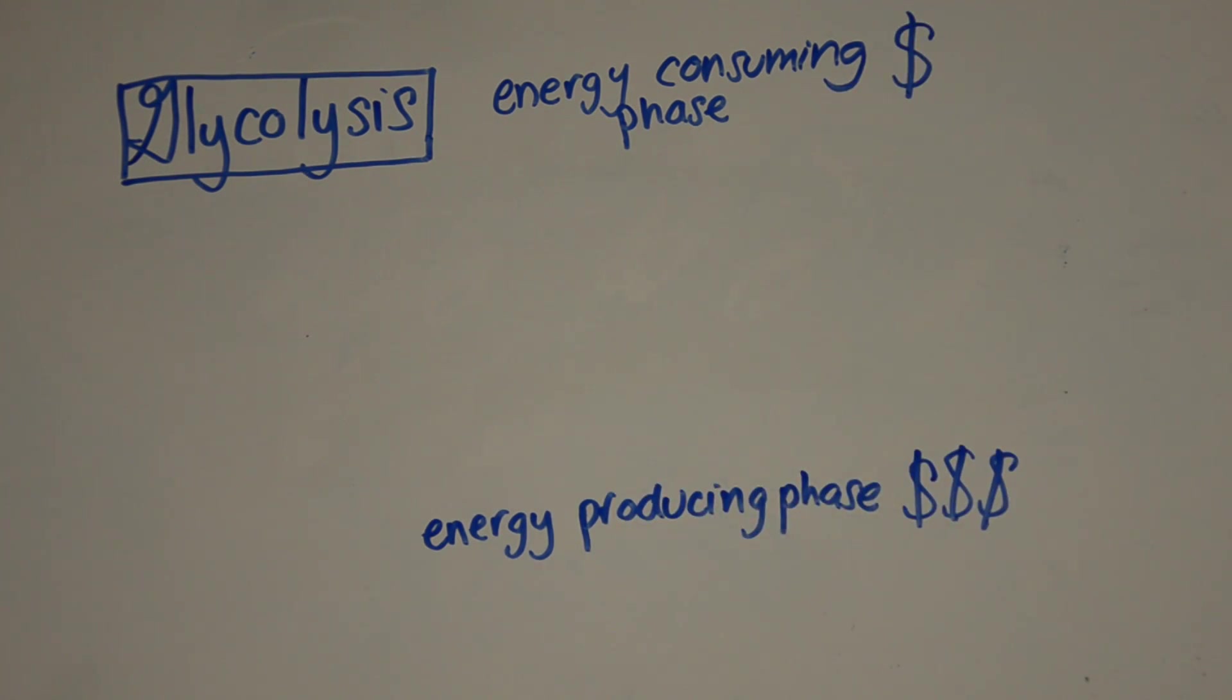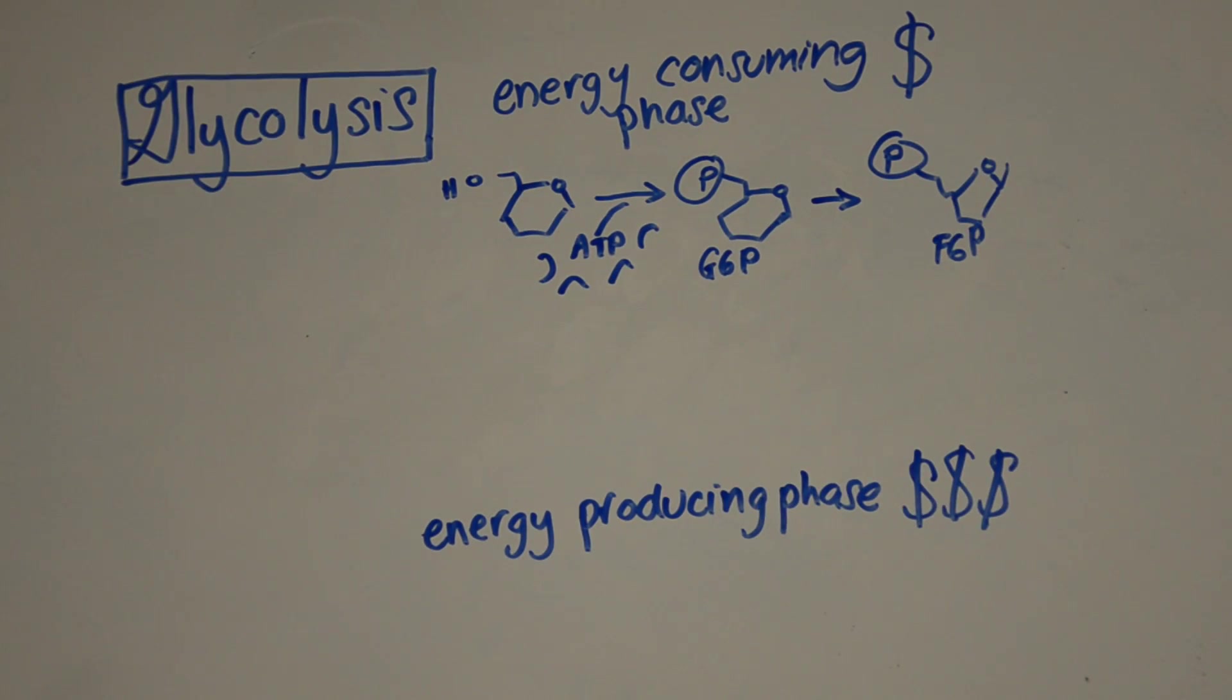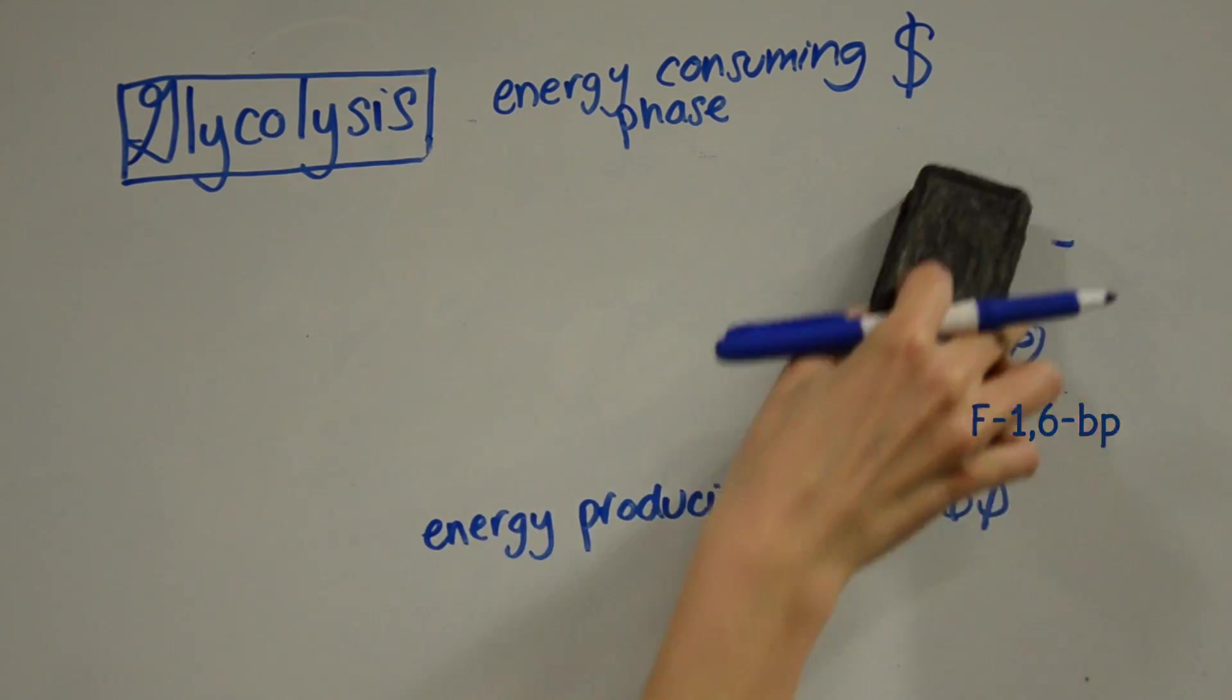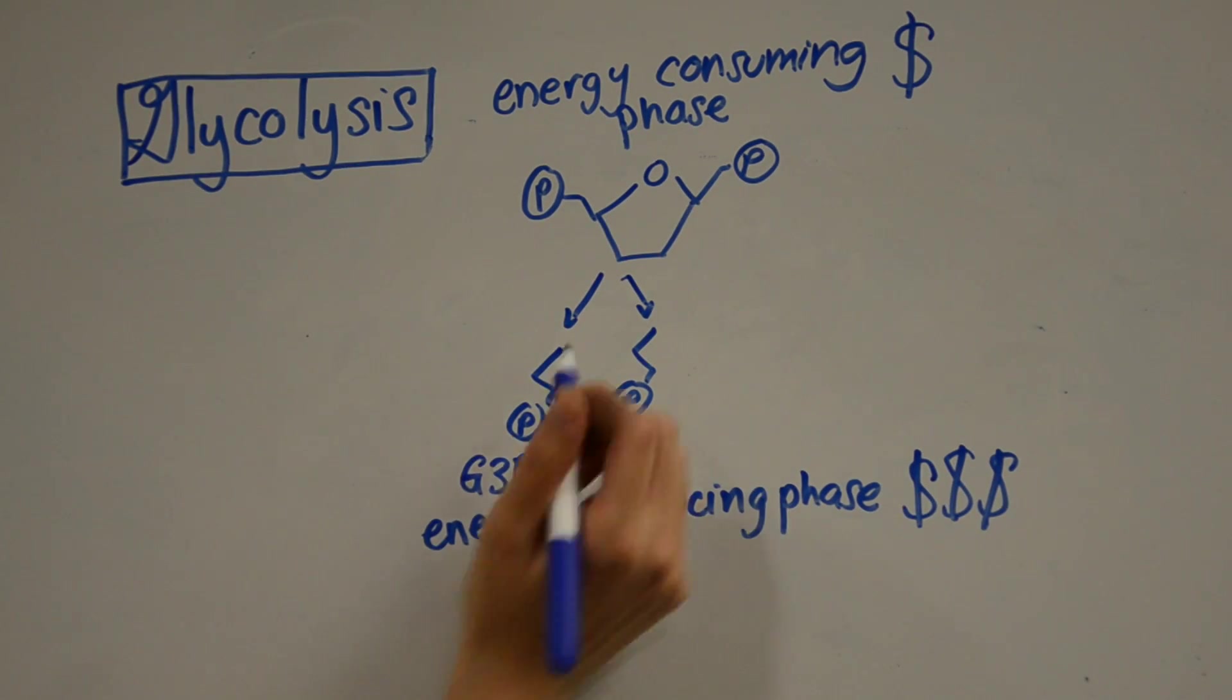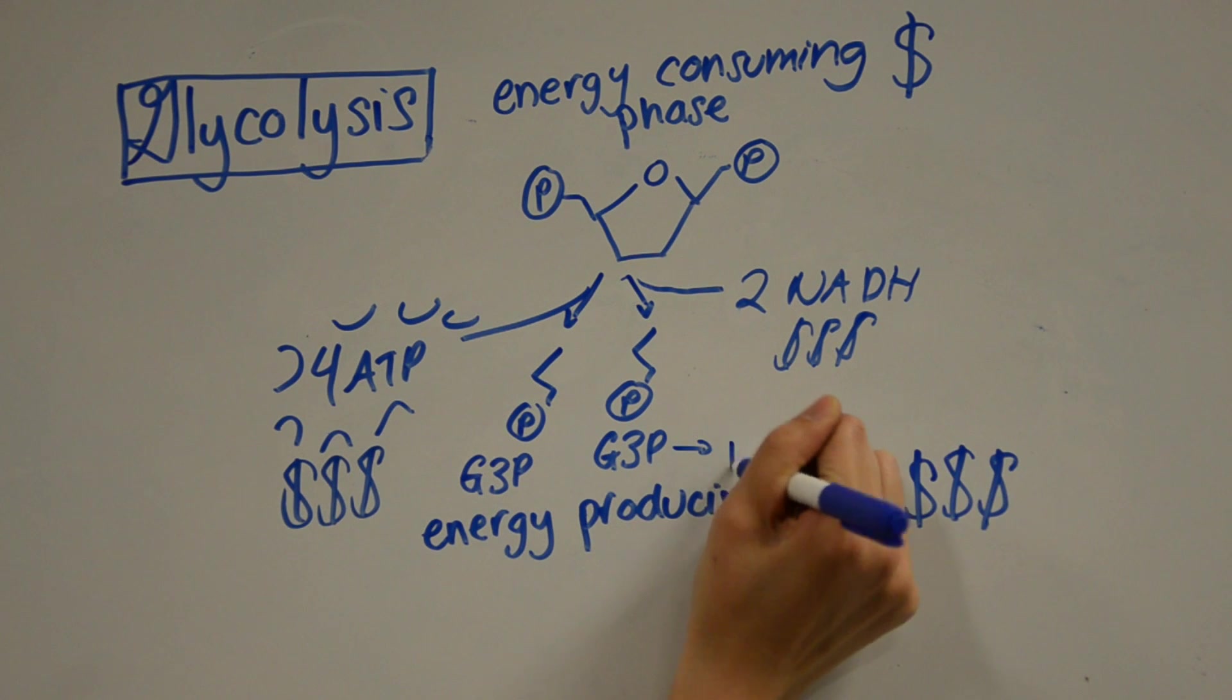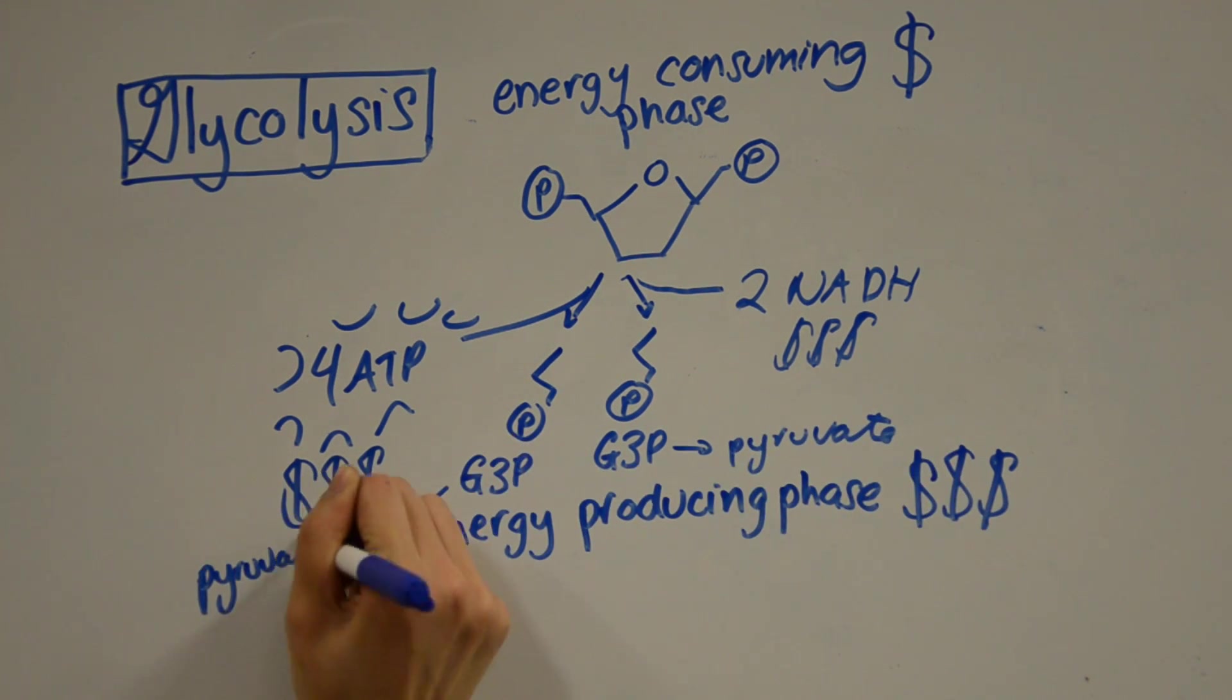In the energy investment phase, one ATP is used to convert glucose into glucose 6-phosphate, which rearranges into fructose 6-phosphate. The second ATP is used to create fructose 1,6-biphosphate, which is split up to form two glyceraldehyde 3-phosphates, accompanied by the production of four ATP and two NADH. After a few more rearrangements, each glyceraldehyde 3-phosphate will eventually become pyruvate.